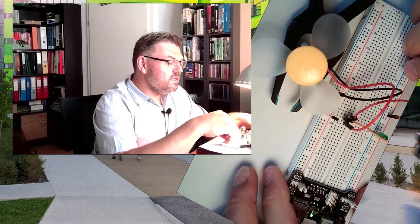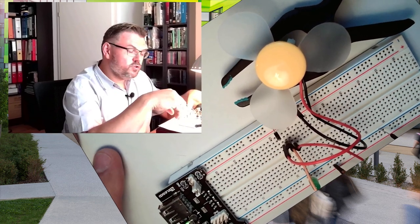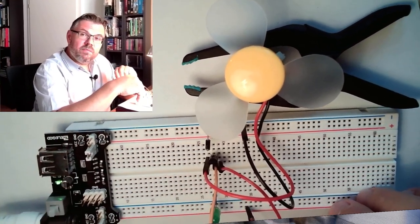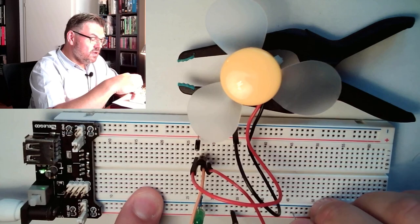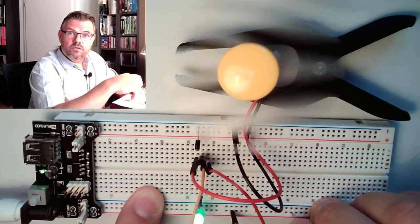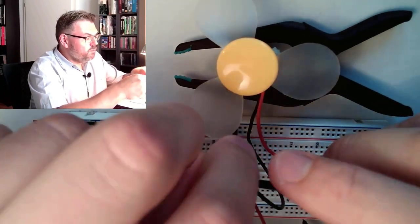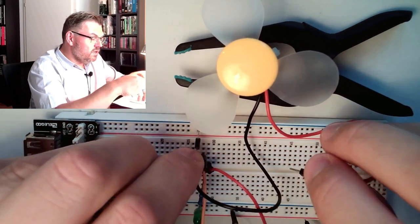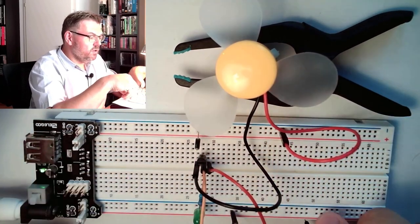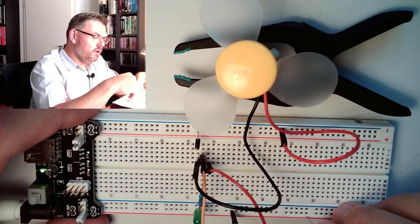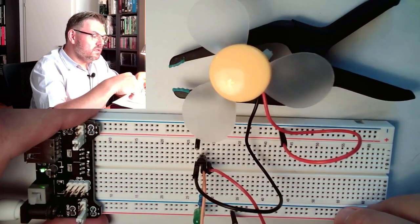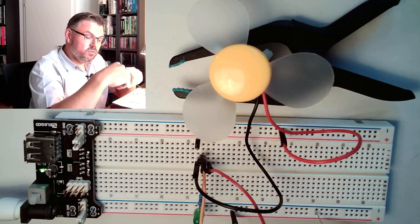In previous videos, we found out that if we change the voltage level, the DC motor will change its speed. We used this setup with a switching element, a transistor. If I plug it in, the motor will start to turn. We also found out that if we change the polarity, just change the connection direction plus and minus of the motor, it is turning in a different direction, exactly the opposite direction.